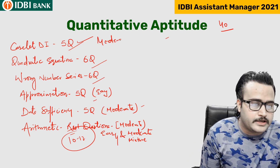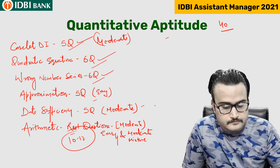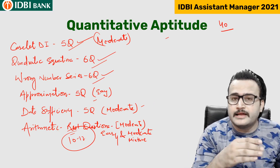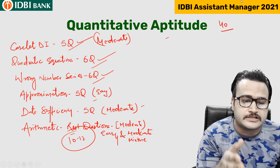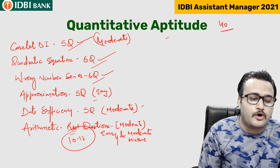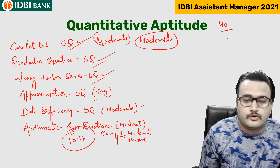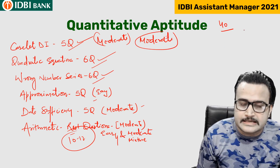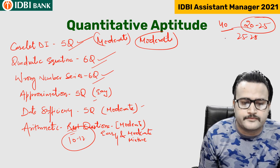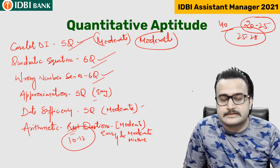Case-let DI was moderate. Quadratic equations and wrong number series were easy. This section was moderate to difficult overall, similar to the banking and insurance exam held in 2021. Out of 40, students are saying the best attempt in the Quantitative Aptitude section was 20 to 25, with some students attempting up to 28.